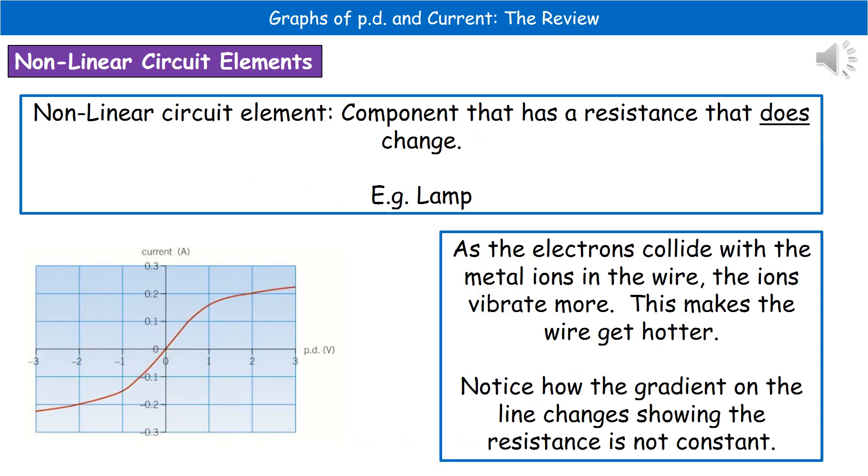The second type of component is a non-linear circuit element. The non-linear circuit element has a resistance that does change. A great example is our lamp, which is our characteristic graph in the bottom left there for a typical filament lamp. It's not a straight line, so that tells us our resistance is changing at different potential differences. As our electrons are colliding with the metal ions in the wire, the metal ions vibrate more, which makes our wire get hotter. When you're asked to plot or sketch one of these graphs for a lamp, it is kind of like that S shape.